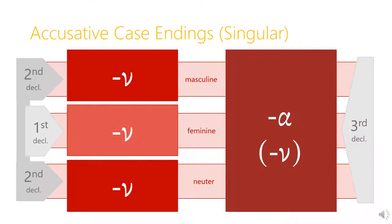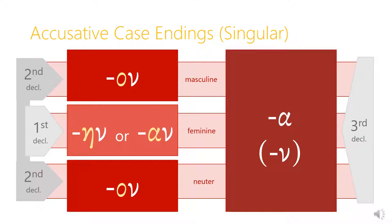Here are the basic singular accusative case endings. In the second declension and first declension, the accusative is formed just by adding nu at the end. In the third declension, the basic case ending for the accusative singular is alpha. But some words — some classes of third declension nouns — use nu, almost like the first and second declension. But generally you should think of first and second declension as nu in the accusative, and third declension as alpha.